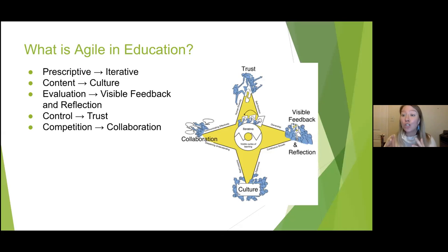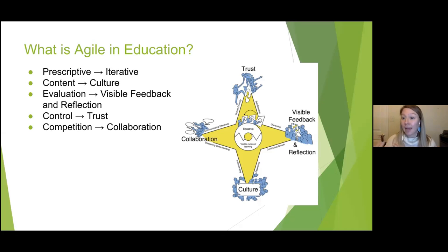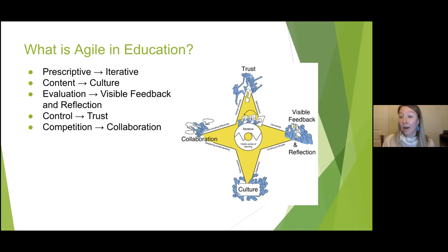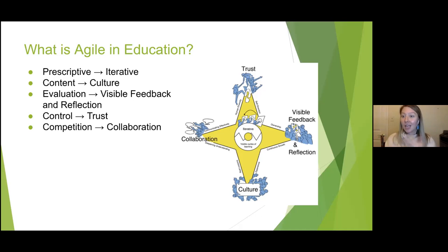The thing that distinguishes Agile from how we traditionally do group work is the focus on delivering a shippable product. With Agile in education, our focus is on potentially shippable increments so we can move things to 'done' — components of our project that are finished and considered done on their own. The Agile in Education Compass guides how we use Agile in the classroom: shifting from prescriptive to iterative, from content to culture, from evaluation to visible feedback and reflection, from control to trust, and from competition to collaboration.